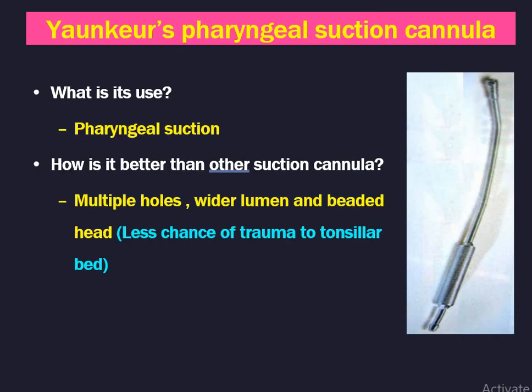Next is Youngers pharyngeal suction cannula — used for pharyngeal suction. How is it better than other suction cannulas? It has multiple holes, a wider lumen, and a beaded head. The beaded head means there is less chance of trauma to the tonsillar bed raw area where bleeding might happen. Therefore, Youngers pharyngeal suction cannula has a special advantage in decreasing bleeding after tonsillectomy.